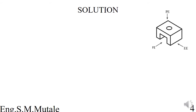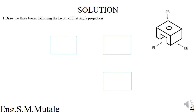For the solution in first angle projection, the first step is to draw three boxes following the layout of first angle projection — the end view on the left, the front view in the center, and the plan below. These boxes must take the correct dimensions of each view, so the lengths and widths must correspond to the actual dimensions of the 3D object.